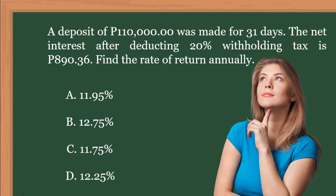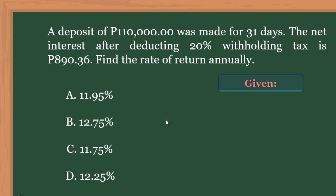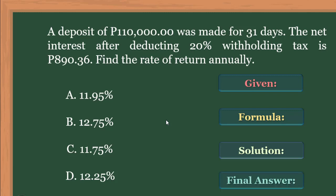We can solve this problem in four easy steps. Number one: given — you should analyze and look for the given in the problem. Number two: formula — you should think of the right formula based on the problem. Number three: you need to have a solution or computation. And the last one is the final answer — you should box the final answer.